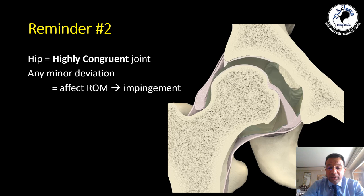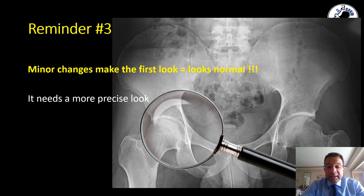The second thing you have to know is that the hip is a highly congruent joint. That means any minor deviation from the exact normal will result in an abnormal range of motion or will affect the range of motion, leading to abnormal abutment or impingement between the two bony surfaces. Because of these minor changes, when you look at the X-ray of femoroacetabular impingement rapidly, this looks normal, and it needs a precise look to definitively diagnose femoroacetabular impingement.